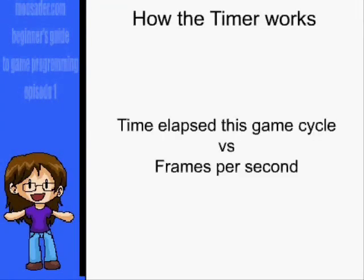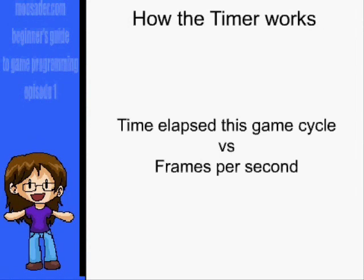What our timer will do is check the game timer against a maximum FPS, and if necessary it will use the SDL delay to throttle the program down to a normal speed.